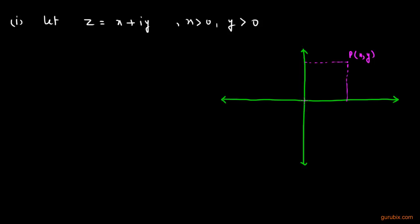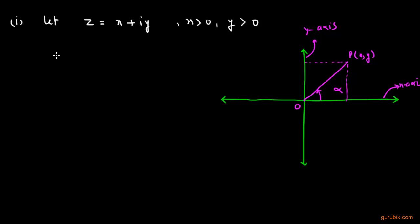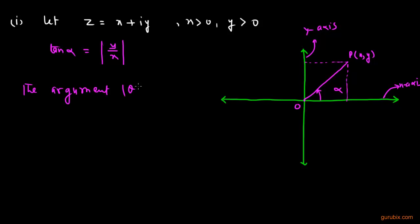Here is the origin, and if we join point P with the origin, we have a positive angle. Suppose we denote this acute angle by alpha, which satisfies the condition tan α = |y/x|, where y is the imaginary part and x is the real part. Then the argument, or amplitude, which we denote by θ, is equal to α.